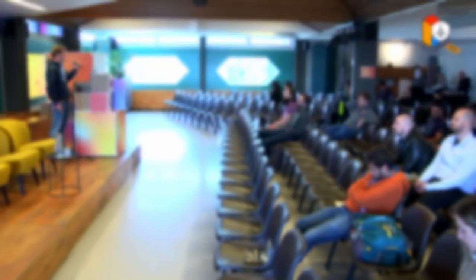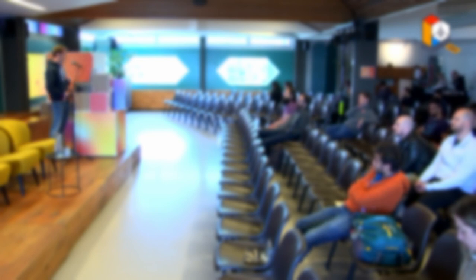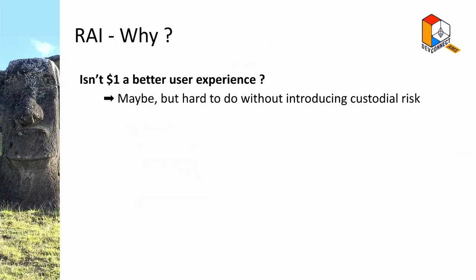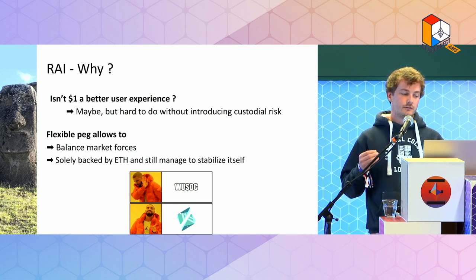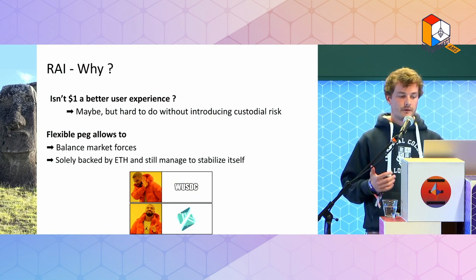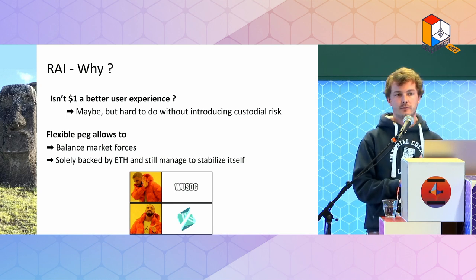There was also a large policy change where Maker lowered the collateralization ratio from 120% to 101% because DAI was trading slightly above peg for quite an extended period, and that fixed the problem. A $1 stablecoin is probably a better user experience, but it's hard to do without introducing custodial risk. A flexible peg allows you to balance market forces and therefore slowly back a crypto-collateralized stablecoin by ETH and still manage to stabilize.